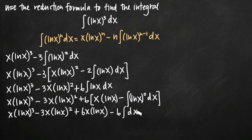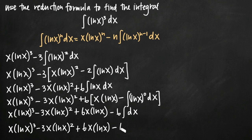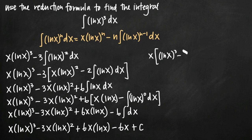So the integral of dx is x, which means our final answer is everything in front minus 6x. Don't forget to add C to account for the constant of integration. That's our final answer. And if you want, you can factor out an x to get x times the quantity ln of x to the 3rd, minus 3 times ln of x squared, plus 6 times ln of x, minus 6, plus C. Factoring out that x simplifies the final answer even further.